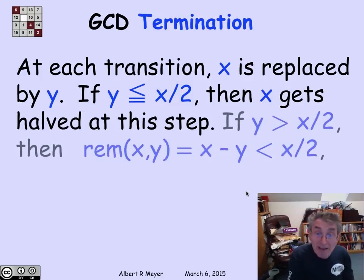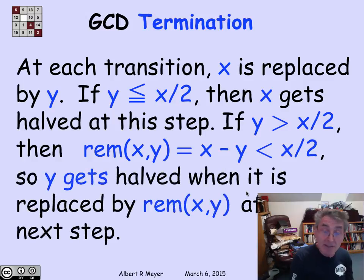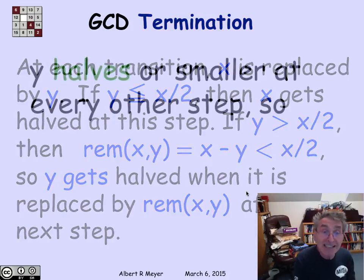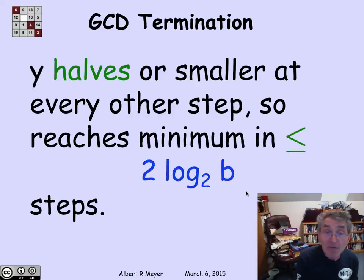What about if y is big? If y is bigger than x over 2, then the remainder of x divided by y is simply x minus y, and it's going to be less than x over 2. But that's going to be the value of y after the next step. So y is going to be halved either at this step or the next step when it's replaced by the remainder of x and y. And the net result is that y gets cut in half or even smaller at every other step, which means that this procedure can't continue for more than twice the log to the base 2 of the original value of y, which is b.